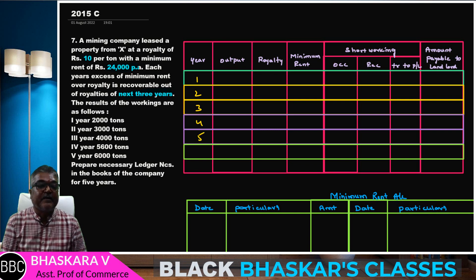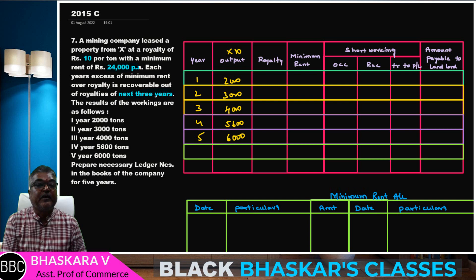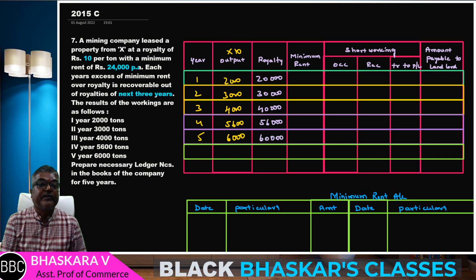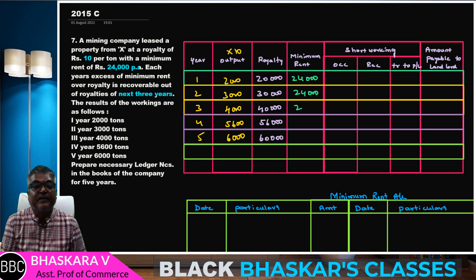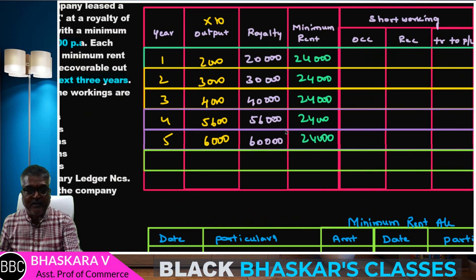Over 5 years, the output is 2,000; 3,000; 4,000; 5,600; 6,000. Multiplied by 10 rupees per unit: 20,000; 30,000; 40,000; 56,000; 60,000. The minimum rent per quarter is 24,000 — consistent across all years.